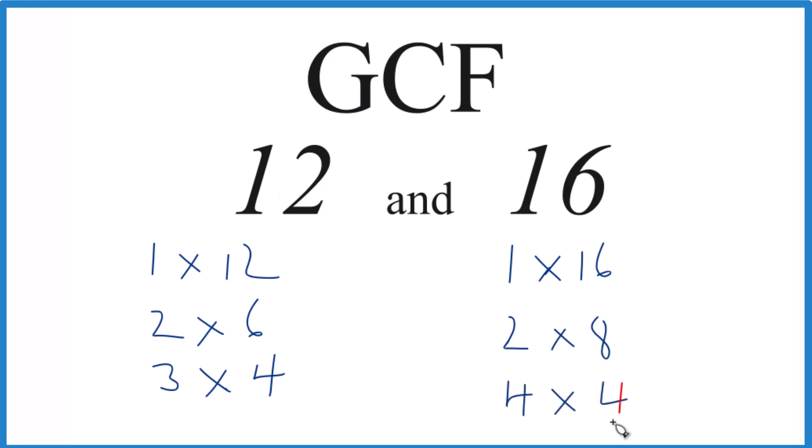So now we compare these lists and we can find the greatest common factor for 12 and 16. 1, that's a common factor. 2 is a common factor. And 4 seems to be the greatest common factor. 4 goes into 12 and it goes into 16 evenly. So the greatest common factor for 12 and 16 is 4.